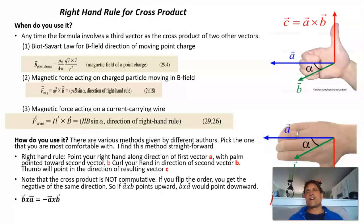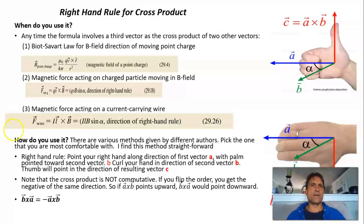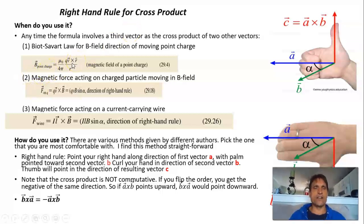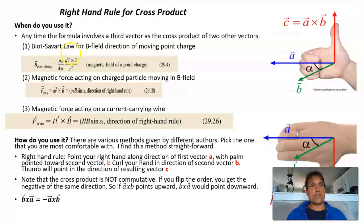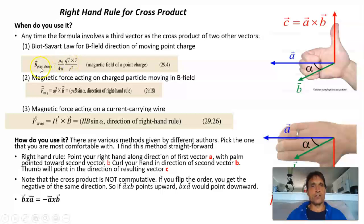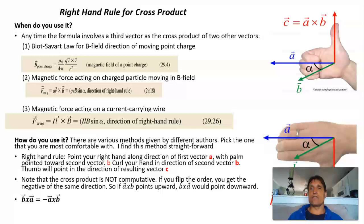The most commonly used right-hand rule is for vectors given by a cross product — any time you have a cross product of two vectors to get a third. For example, in the Biot-Savart Law for a point charge, the magnetic field of a moving point charge, you have velocity crossed with the position vector, and that gives a vector which is perpendicular to the two — the magnetic field direction. If you read enough of these books, you'll see several different versions of the right-hand rule. Just pick the one that works for you.